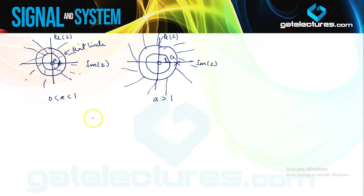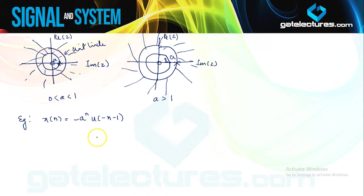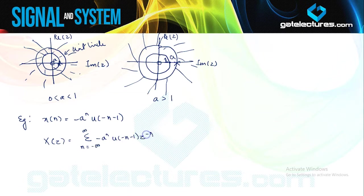Now consider another sequence x(n) equals minus a^n * u(−n−1). If we try to find its Z-transform X(Z), it is going to be the summation from minus infinity to infinity of (−a^n) * u(−n−1) * Z^(−n). Since this is multiplied by u(−n−1), the signal exists only from minus infinity to 0, and the summation reduces to (a*Z^(−1))^n over that range.